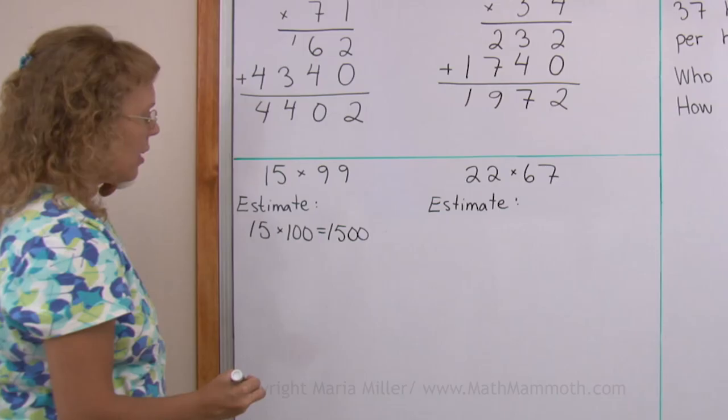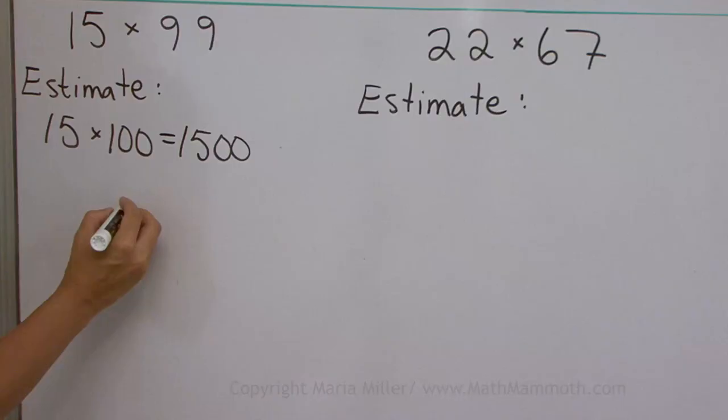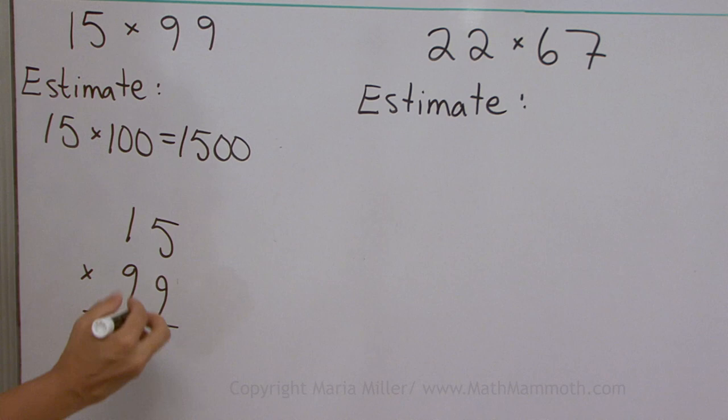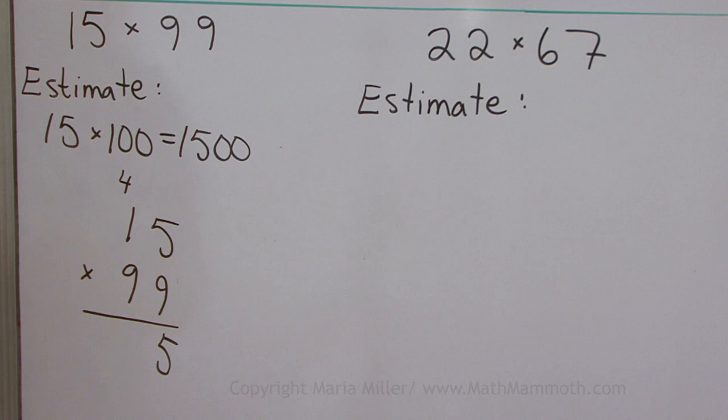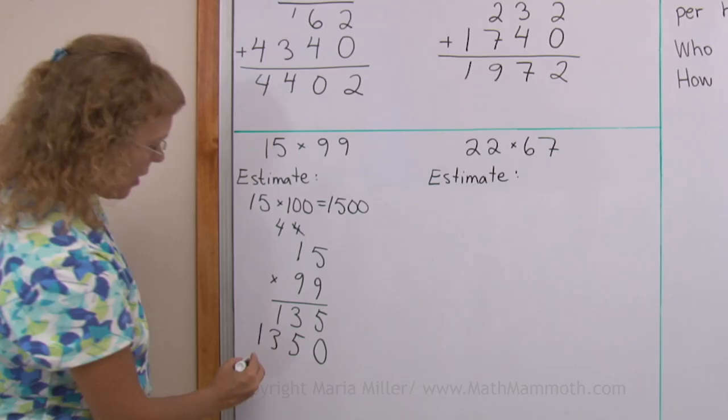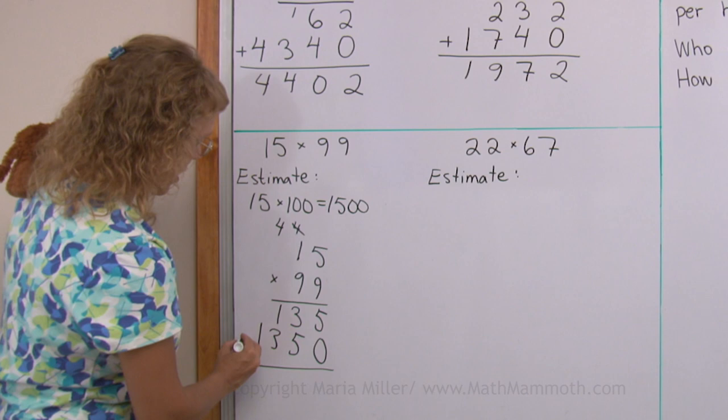So 15 times 99. First ignore this 9 and go 9 times 5 and 9 times 1. 9 times 1 plus 4, that's 13. Cross that off. Then I need to put my 0 there and go 9 times 5 is still 45 and this is still going to be 13. And now add 5, 8, 4, 1. And yes, it is close to 1500, right?